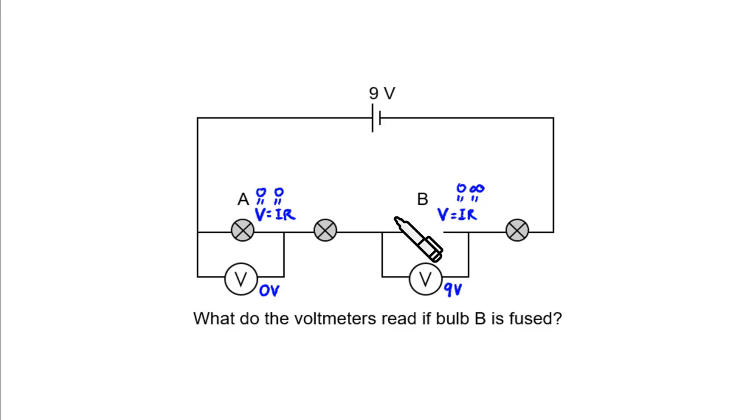Now remember, there's no currents flowing. So the PD across this bulb is zero. The PD across this bulb is also zero, which means the potential is the same here, here, and here, and here. The potential is the same from here all the way across the bulb since there's no potential difference across this bulb and also across this bulb.